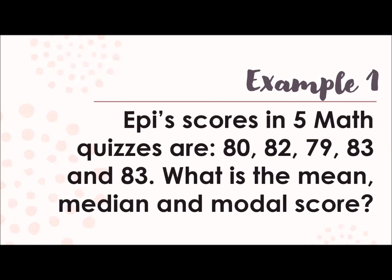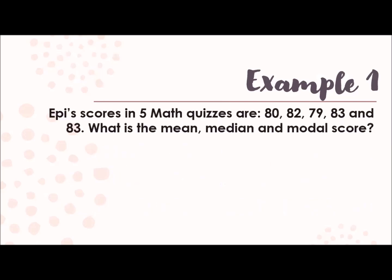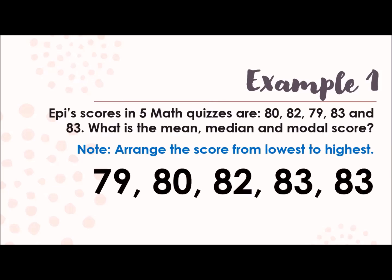So example number one: EPI scores in five math quizzes are 80, 82, 79, 83, and 83. What is the mean, median, and modal score? So the first question here is the mean, median, and the mode. But before we do that, we need first to arrange the scores from lowest to highest. So the correct arrangement here is 79, 80, 82, 83, and 83.